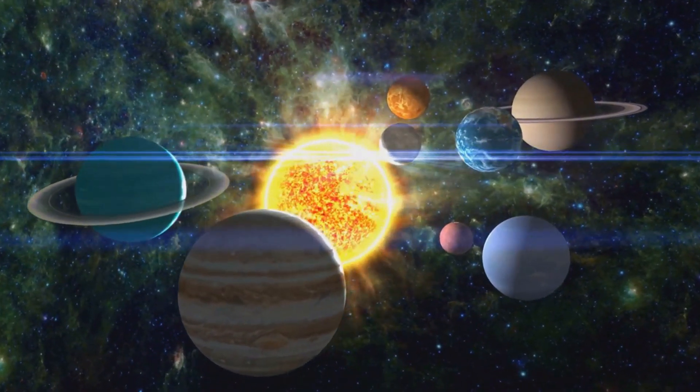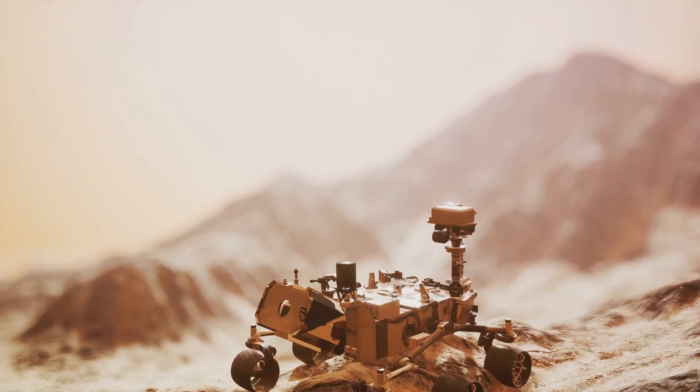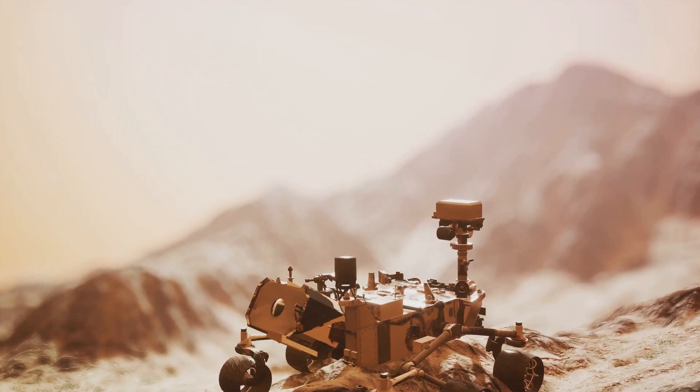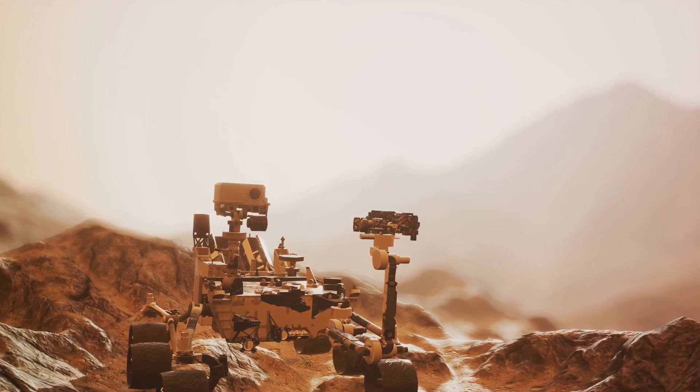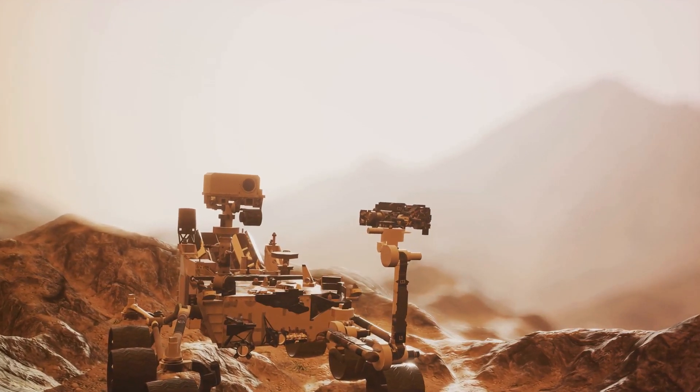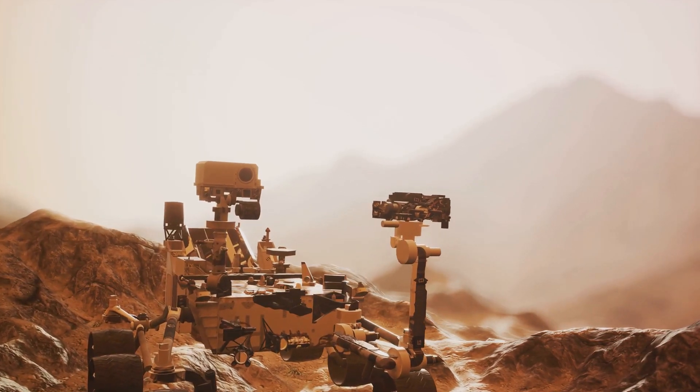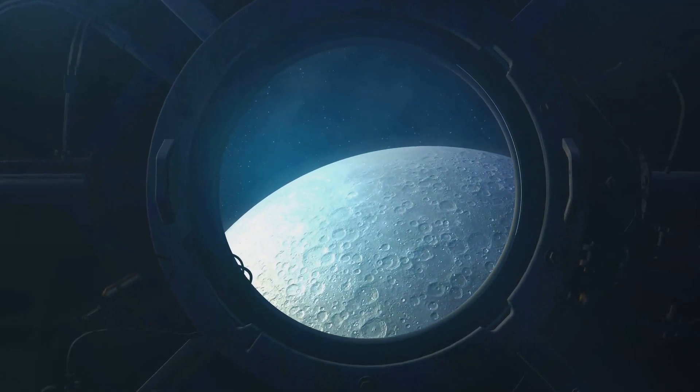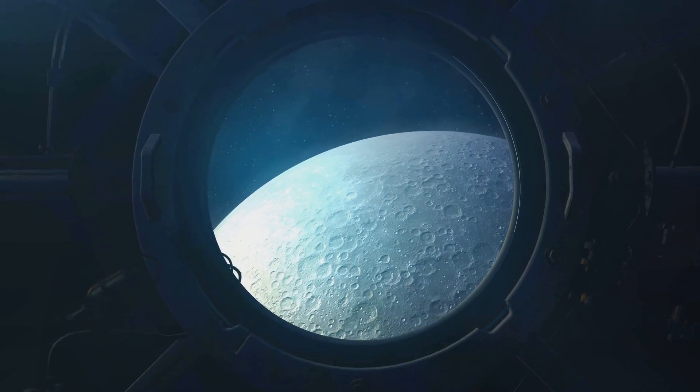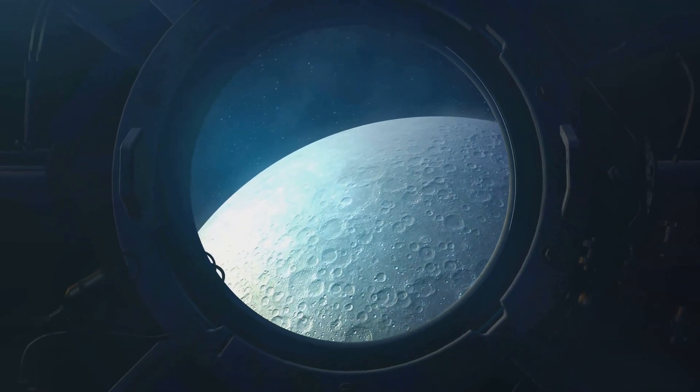And let's not forget our own solar neighborhood. Mars, the red planet, has long captured our imaginations and ambitions. With rovers already on its surface and plans for manned missions in the pipeline, we're on the brink of becoming a multi-planetary species. But Mars is just the beginning. The moons of Jupiter and Saturn with their subsurface oceans offer tantalizing possibilities for life.